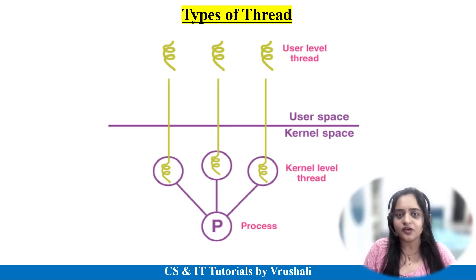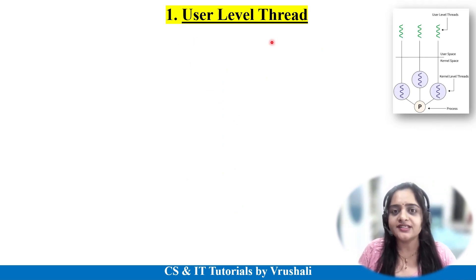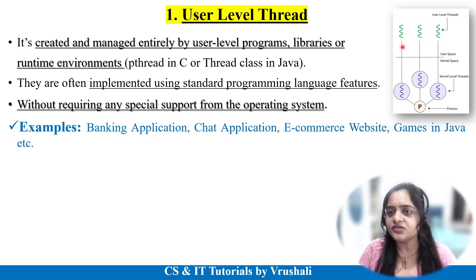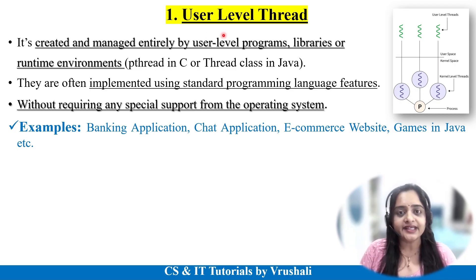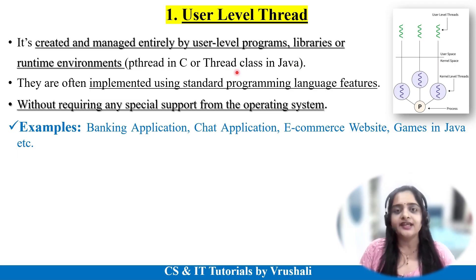The next topic is types of threads. There are total two types of threads: User Level Thread and Kernel Level Thread. User level thread works on the user side — on user space — and kernel level thread works on the side of the operating system. The first type is the User Level Thread. All user level threads work on user space; they don't interact with the operating system. These user level threads are created and managed by user level programs or runtime environments. Some programming languages like C have their own pthread class, and Java has its own thread class or library. This thread class is useful for performing multiple functionalities at the same time.